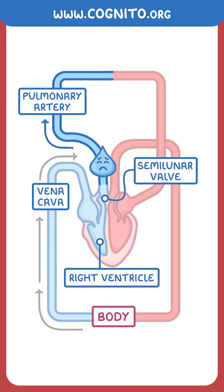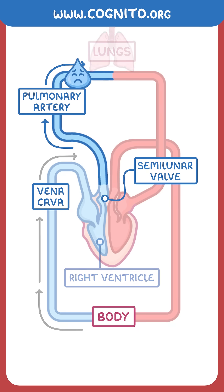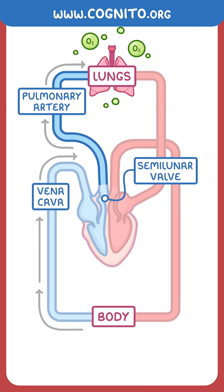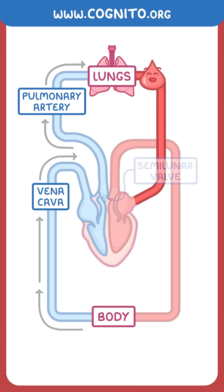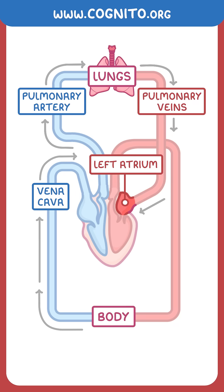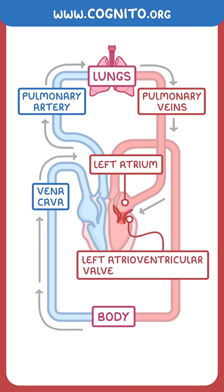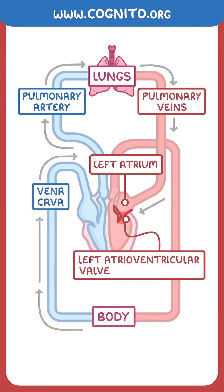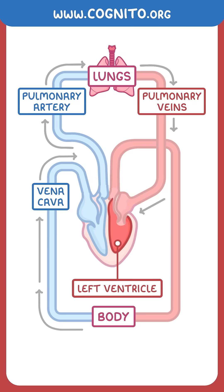the semilunar valve and into the pulmonary artery, which carries it to the capillaries in the lungs where it's oxygenated. It then continues into the pulmonary veins and goes back to the heart into the left atrium. This then contracts and pumps the blood through the left atrioventricular valve, or bicuspid valve, to the left ventricle,